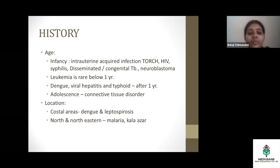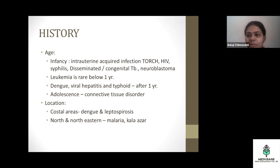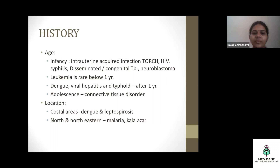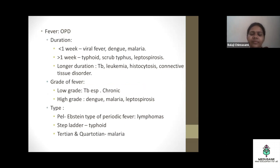Location matters. In coastal areas where mosquitoes and rats are prevalent and sewage problems exist, think dengue and leptospirosis. In northern and northeastern India, malaria and kala-azar are prominent — kala-azar is very particular to the north and northeast, while malaria is prominent in the northern states but also seen in southern states.